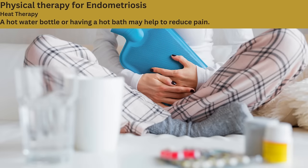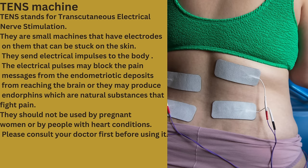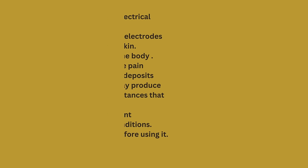Complementary therapies: Some women have found complementary therapies helpful, such as reflexology, acupuncture, and vitamin B1 and magnesium supplements. Physical therapy: heat therapy — a hot water bottle or a hot bath — may help to reduce pain. TENS machine: TENS stands for transcutaneous electrical nerve stimulation. These are small machines with electrodes that can be stuck on the skin; they send electrical impulses to the body. The electrical impulses may block pain messages from the endometriotic deposits from reaching the brain, or they may produce endorphins, which are natural substances that fight pain. TENS should not be used by pregnant women or by people with heart conditions — please consult your doctor before using.